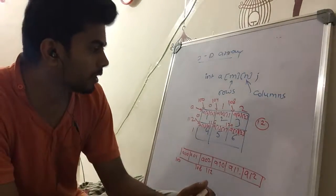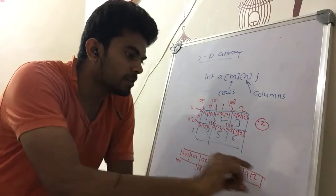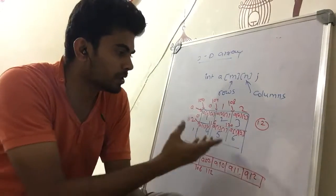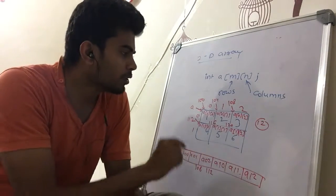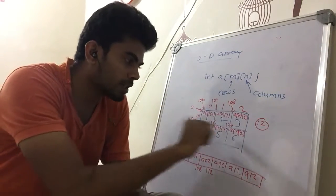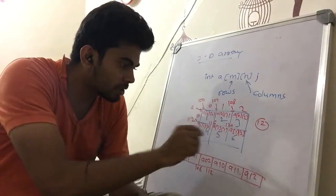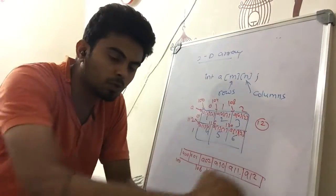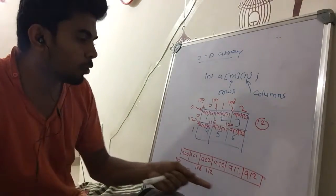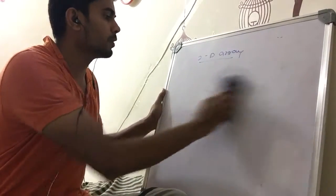That's called row major order. In this order, memory is considered as a 1D tape, and we store elements in consecutive fashion. Either a row is completely stored first — first row, then second row, then third row — or first column is completely stored, then second column, then third column. The second way is called column major order. The first way is row major order. Let us discuss both ways to store a 2D array in memory.